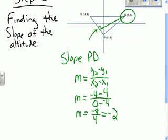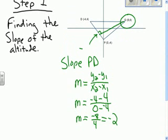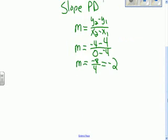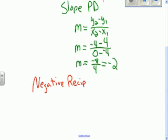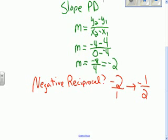Now, if we know that the slope is negative 2, then what we need to do is we need to think about what is the negative reciprocal. Now remember, we can write that as a fraction, and what we do is we invert that, and it becomes negative 1 half.